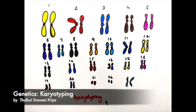Today we'll discuss karyotyping. Before going to karyotyping, I'll give a small idea about chromosomes. There are 12 pairs of autosomes and 1 pair of allosomes in each cell. In this picture we'll see the arrangement of chromosomes according to the Denver classification, where chromosomes are arranged according to their length and position of the centromere.